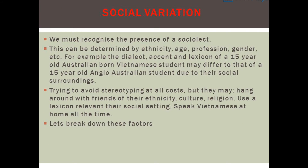Social variation. We must recognize the presence of a social act. This can be determined by ethnicity, age, profession, gender, etc. For example, the dialect, accent and lexicon of a 15-year-old Australian-born Vietnamese student may differ to that of a 15-year-old Anglo-Australian student due to their social surroundings.